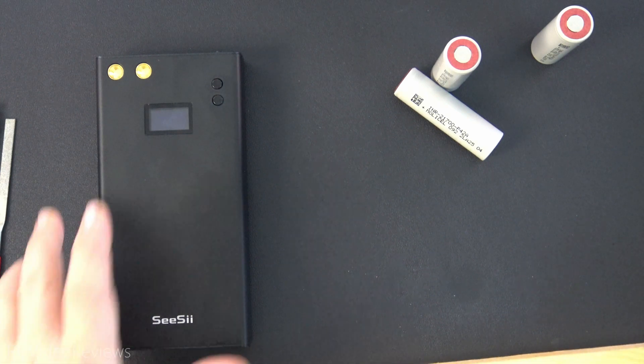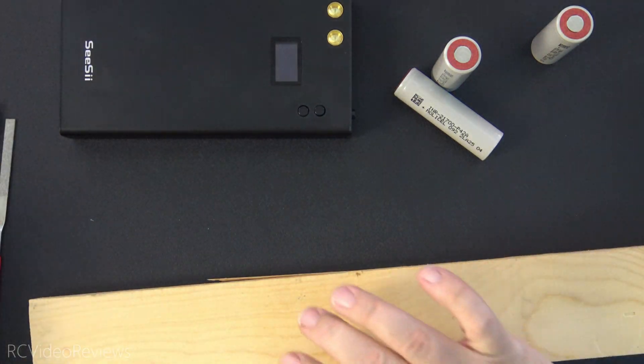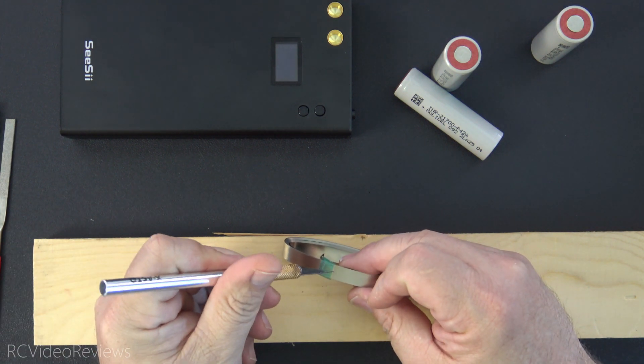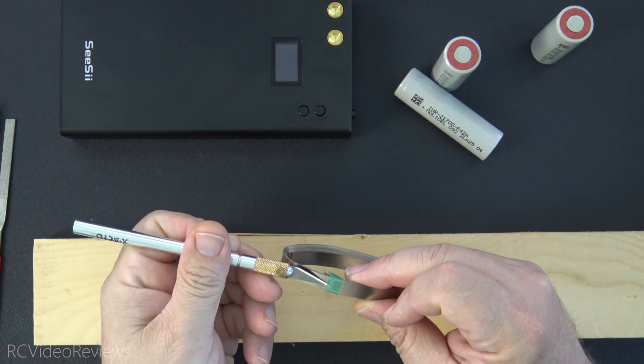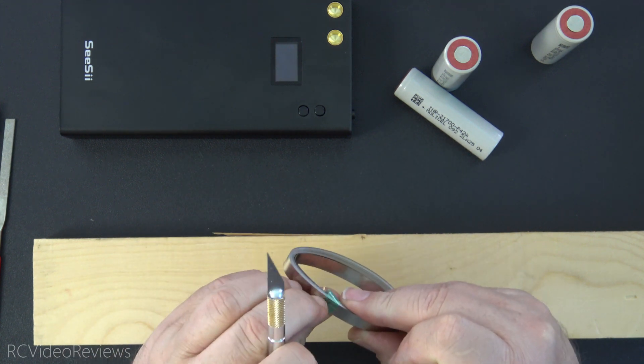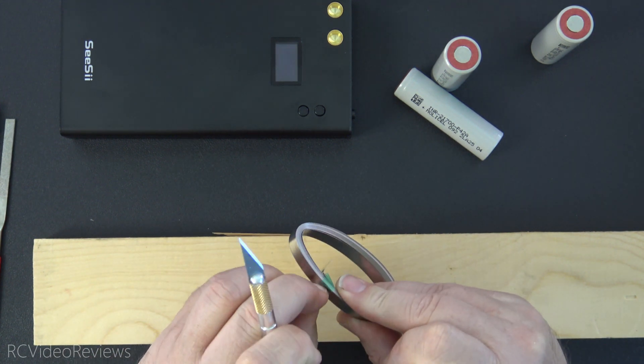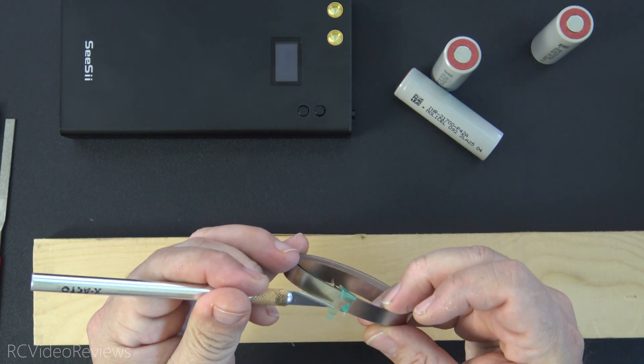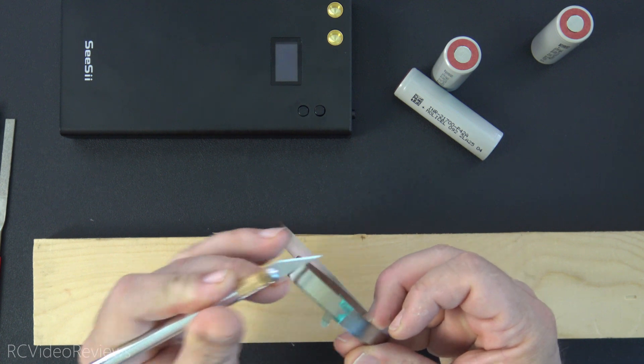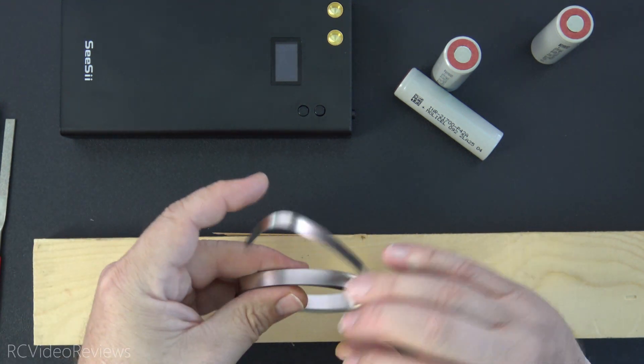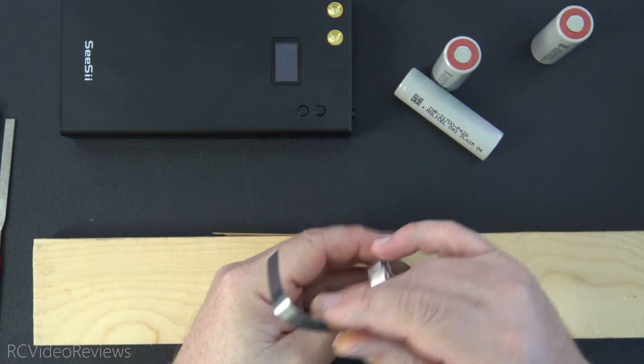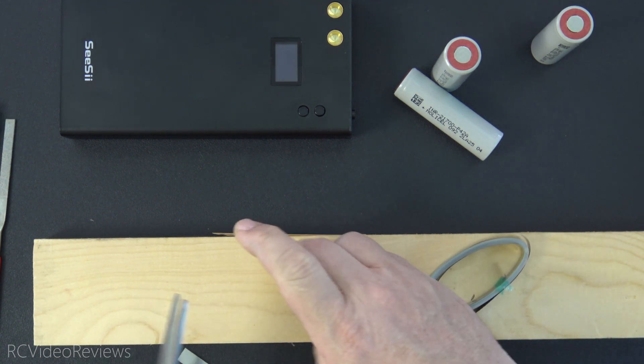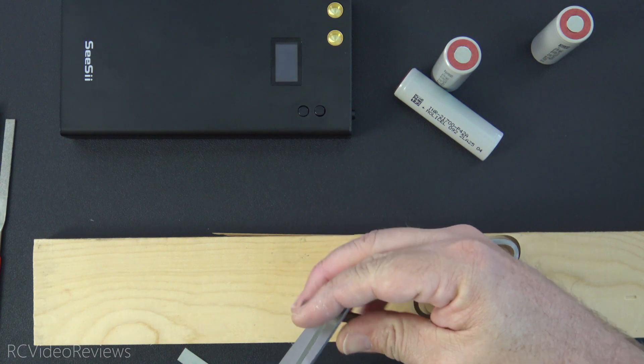Since I've never spot welded anything with this unit before, what I want to do first is take this nickel strip out and run a few test runs just to get an idea from a power level where I need to be. I also know from past experience building lithium ion batteries that I need to jack that power level up just a little bit when we start working on the batteries. So what we'll do is get my board out here and put a nickel strip down and make a few test runs. We'll try and fuse a couple strips together and see how it goes.